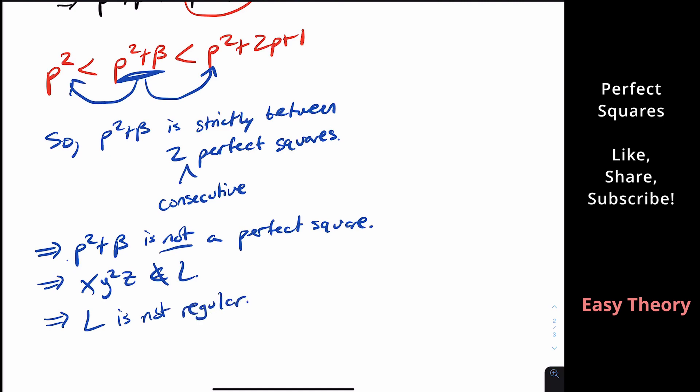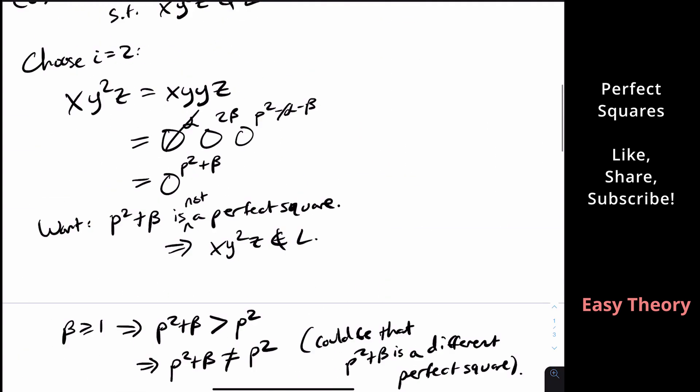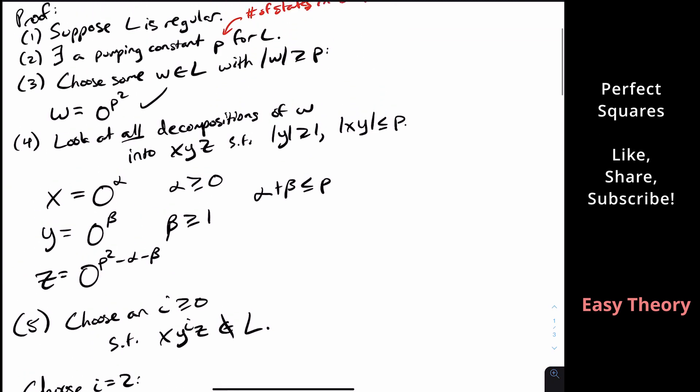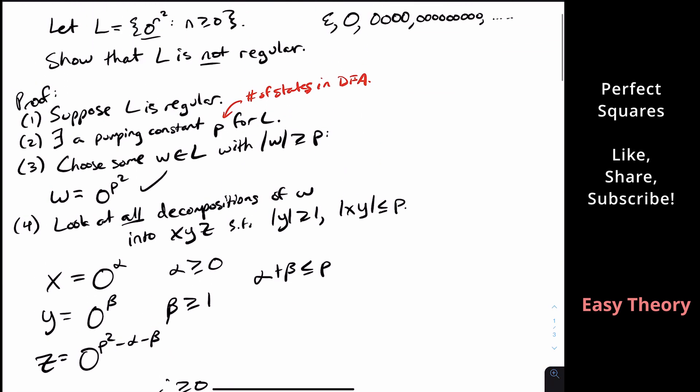Because if L were regular, then this derived string would have to be in L, but it's not. So the language itself is not regular. I hope that was interesting — let me know if you found a different way to prove it. Please like the video, it helps with the YouTube algorithm, and please subscribe if you haven't yet. I'll see you next time.